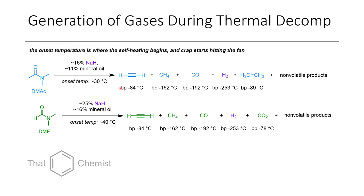In the case of DMF, it was somewhat sensitive at 10%, but at 25% sodium hydride the temperature rose at around 600°C per minute of self-heating. The products formed included acetylene, methane, carbon monoxide, hydrogen, and carbon dioxide, all well above their boiling points.